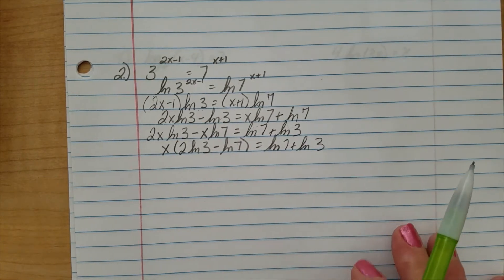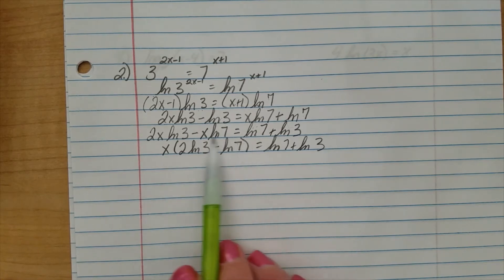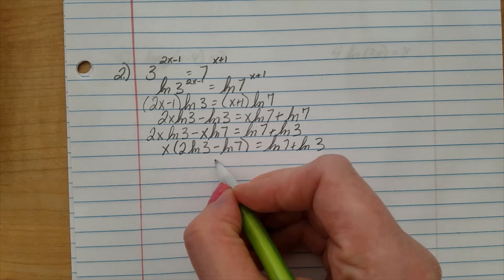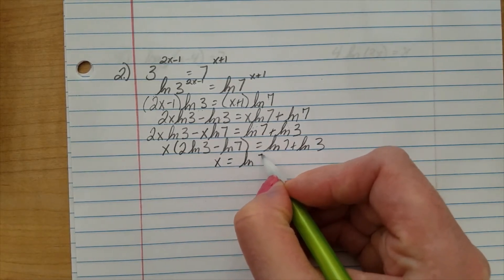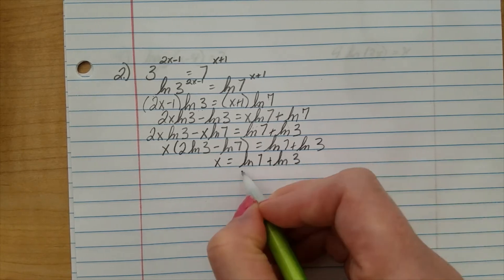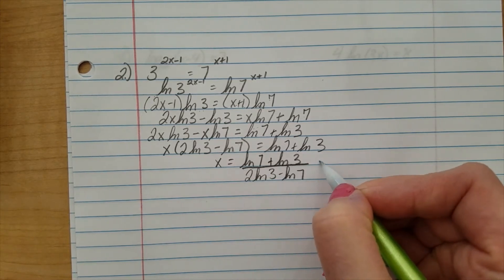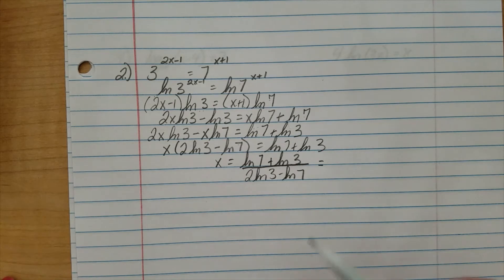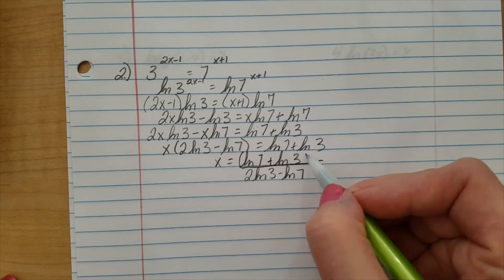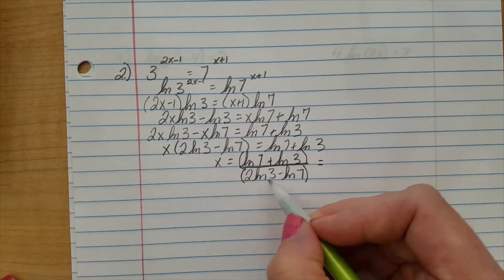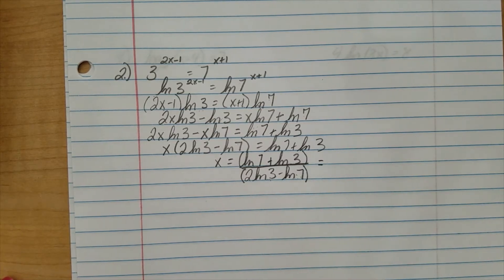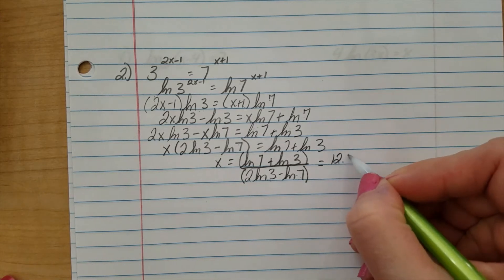Again, trying to isolate x. We have multiplication here. Let's divide out this binomial to get x by itself. So, I end up with x equals natural log of 7 plus natural log of 3 all over 2 natural log of 3 minus the natural log of 7. I recommend, and it depends on what calculator you're using, put parentheses. When you enter them here, you will probably have to use some parentheses on your natural logs as well, depending on what calculator you're using. If you're having difficulty, please just email me and let me know what calculator you're using, and I will walk you through. And that's going to get us 12.11.